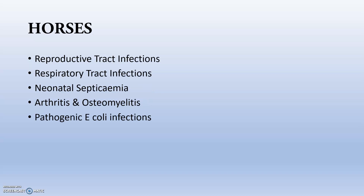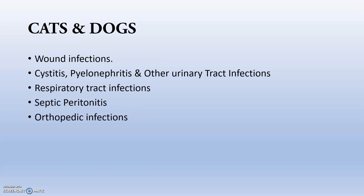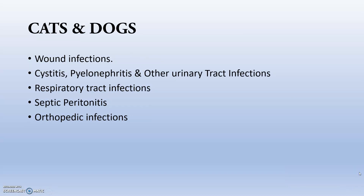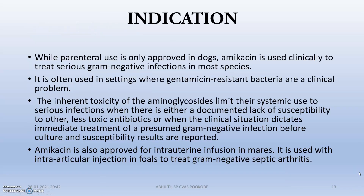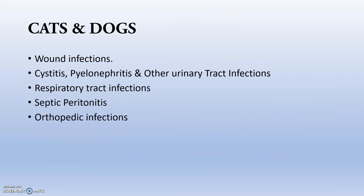In horses, indications include reproductive tract infections, respiratory tract infections, neonatal septicemia, and pathogenic E. coli infections. In cats and dogs, it is used for septic peritonitis and orthopedic infections. Generally, amikacin is used to treat gram-negative infections, gram-positive infections, and mainly Pseudomonas infections.